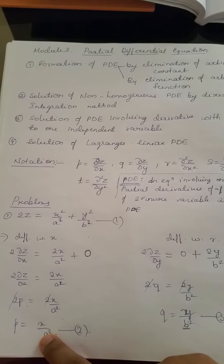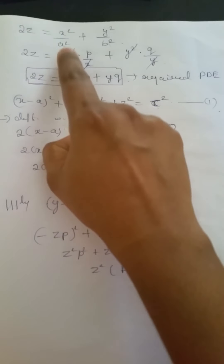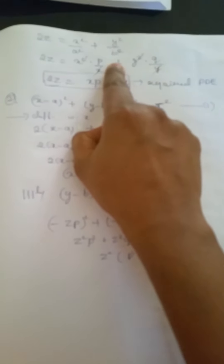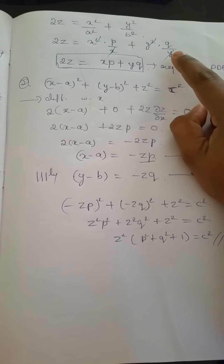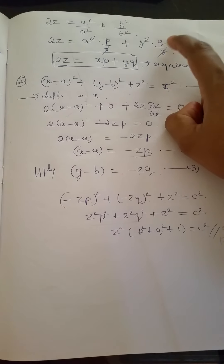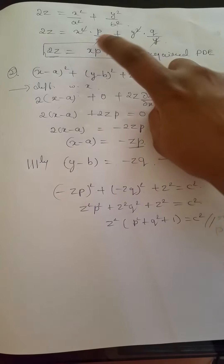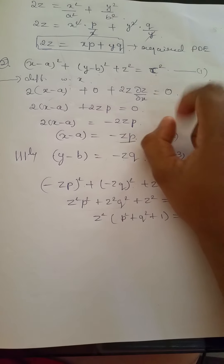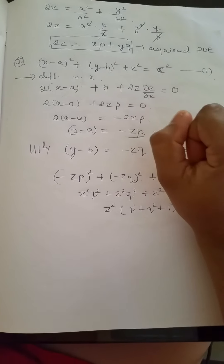Now we substitute Equations 2 and 3 back into the first equation. Writing the first equation: 2z = x²/a² + y²/b². From Equation 2, 1/a² = p/x, and from Equation 3, 1/b² = q/y. Substituting, 2z = x·(p/x) + y·(q/y), which simplifies to 2z = xp + yq. This is the required first-order partial differential equation.